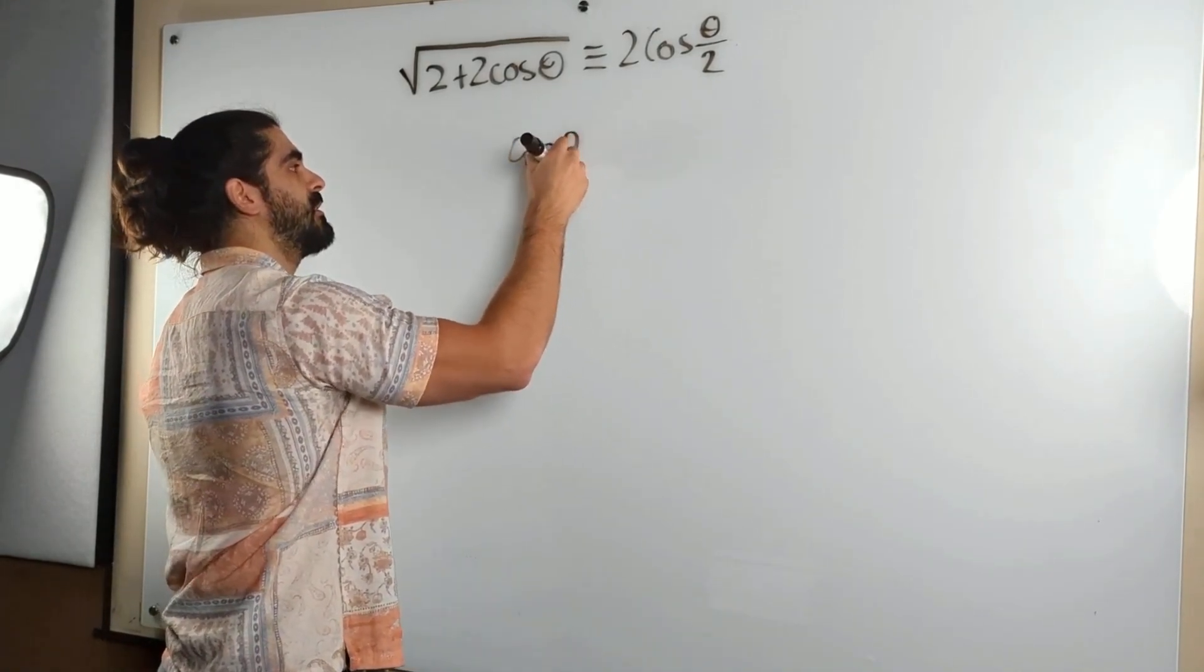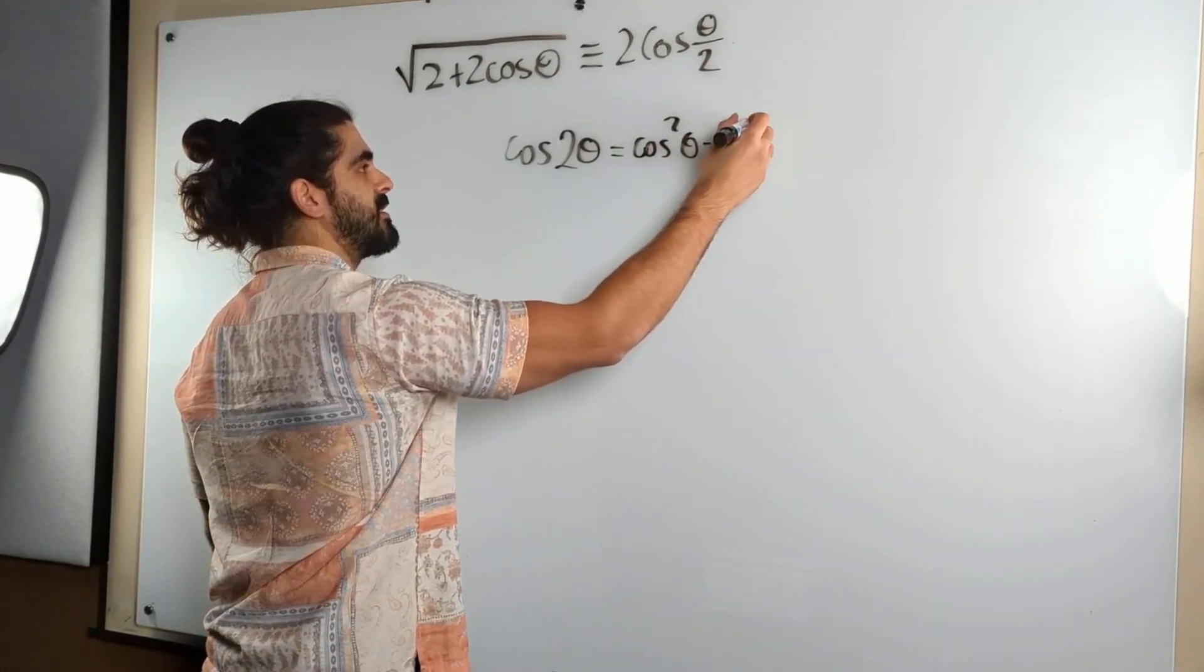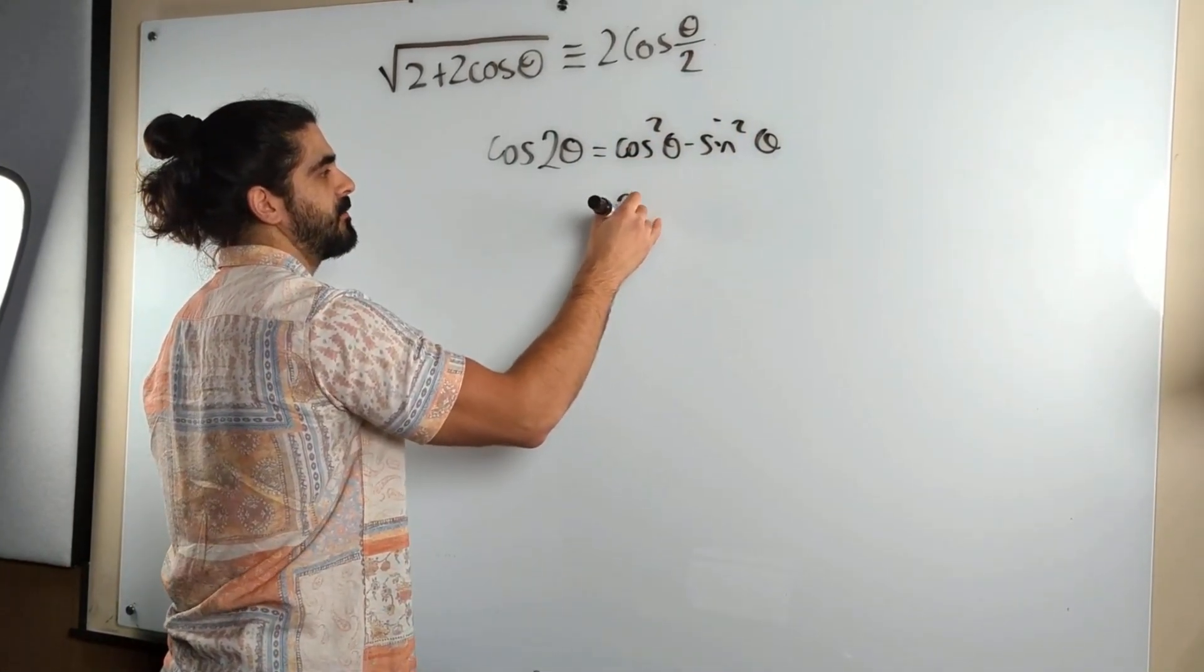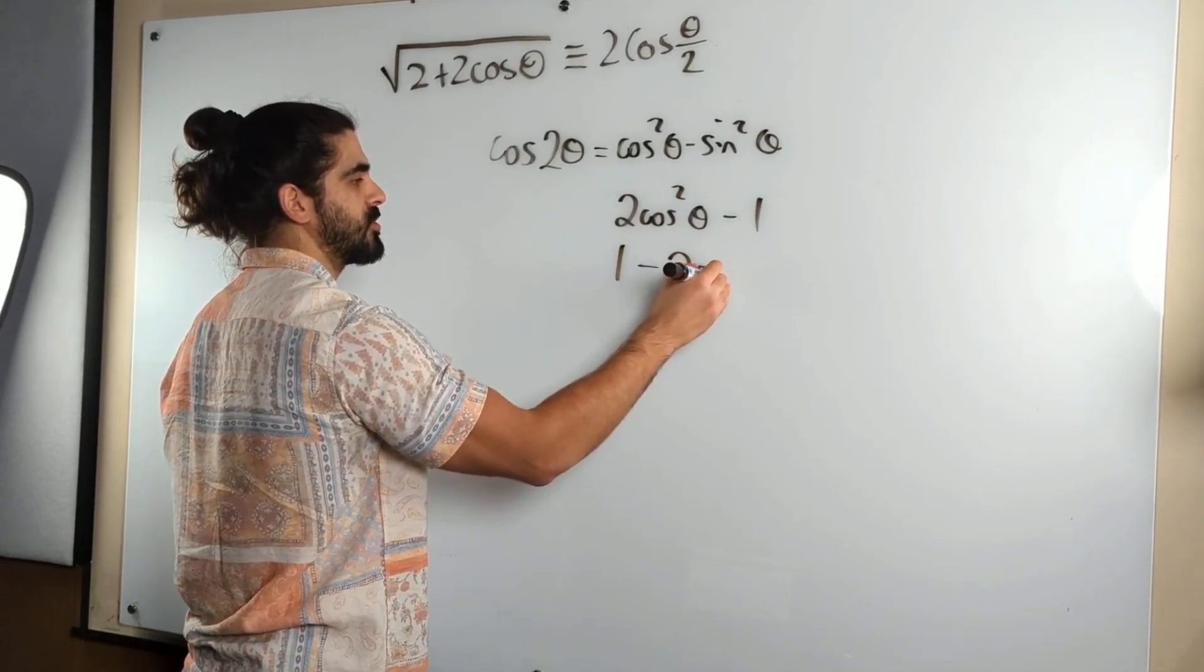Now there's three different versions. We have the standard cos²θ - sin²θ. Then we have 2cos²θ - 1 and 1 - 2sin²θ.